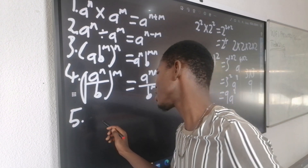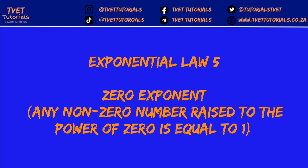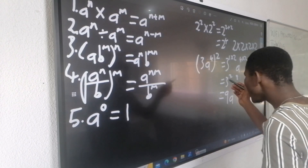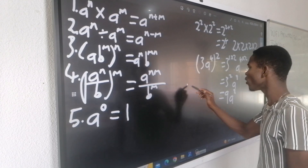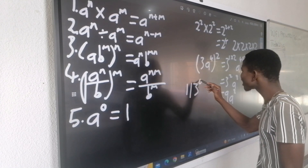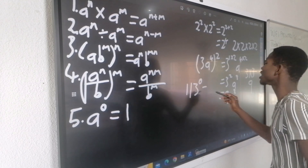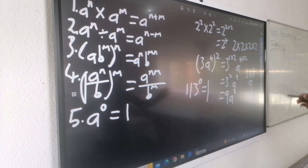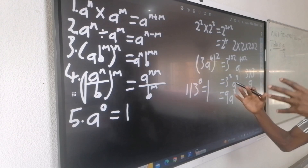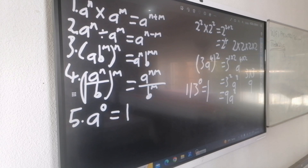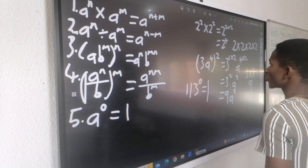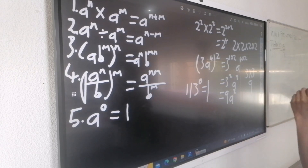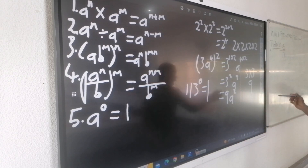Exponential law number 5 says that any number to the power of 0 equals 1. You can try it on a calculator — just press any number, as long as its exponent is 0, your answer will always be 1. It does not matter how big or small that number is; as long as the exponent is 0, it will be 1.